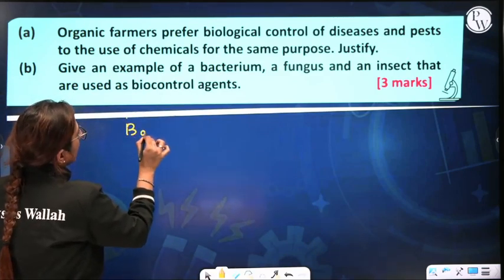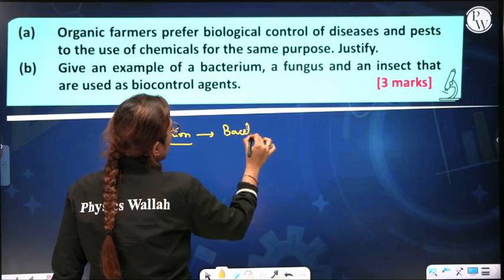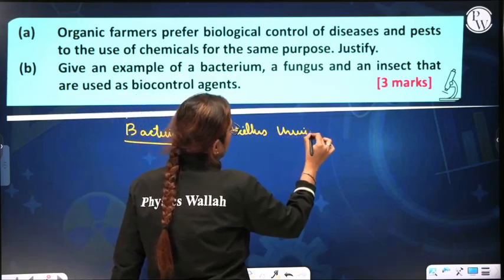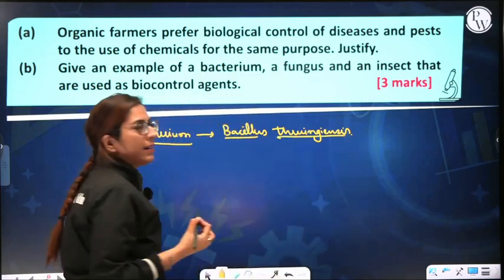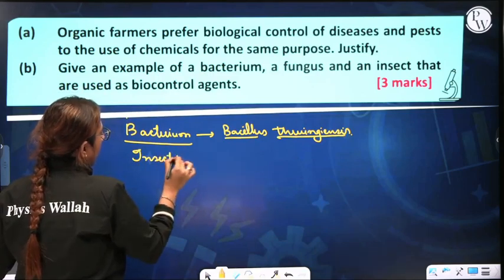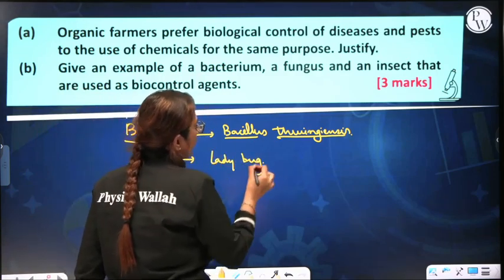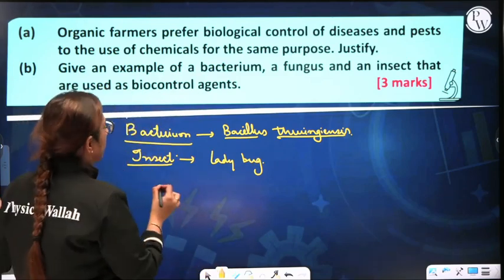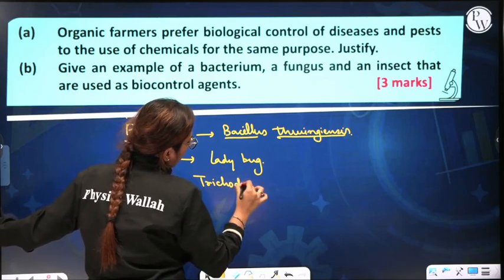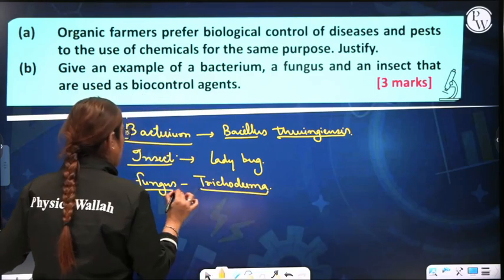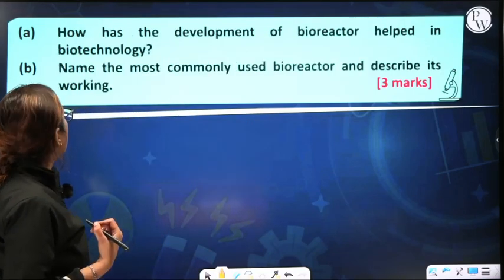Give an example of a bacterium, fungus, and insect used as biocontrol agents. For bacterium: Bacillus thuringiensis (Bt). For insect: ladybug. For fungus: Trichoderma. These are some of the important biocontrol agents.